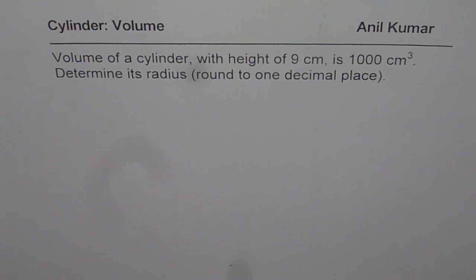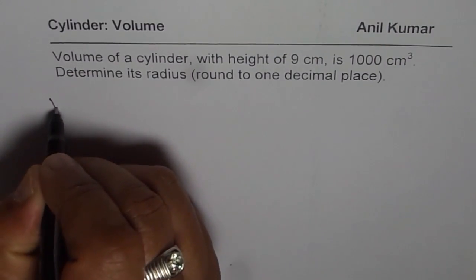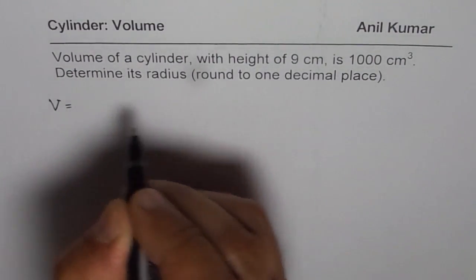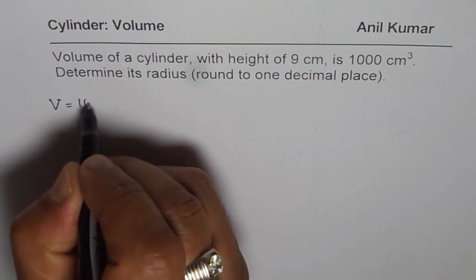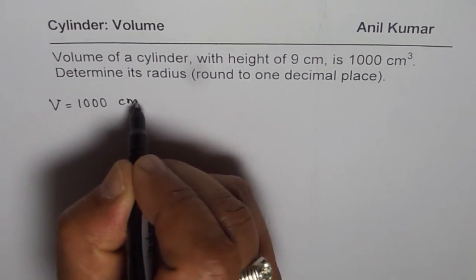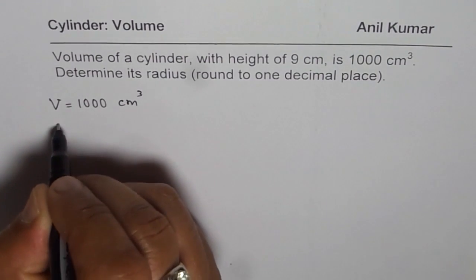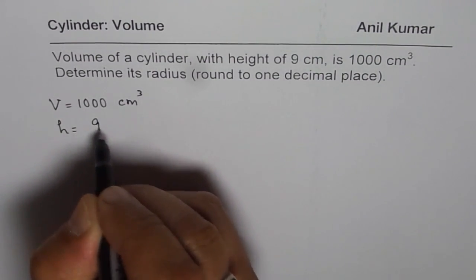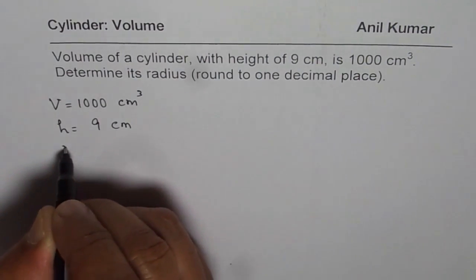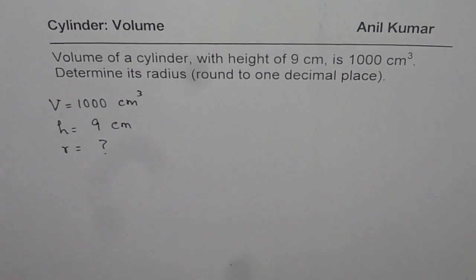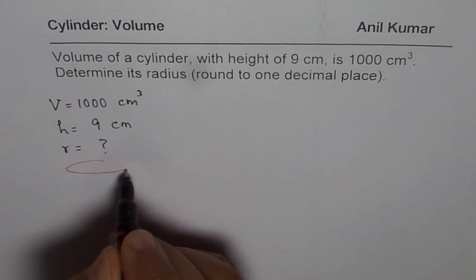Determine its radius round to one decimal place. So what we are given here is volume which is 1000 cm cube. We are also given height which is 9 cm and radius is something which we need to find. All this is given for a cylinder.